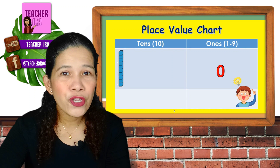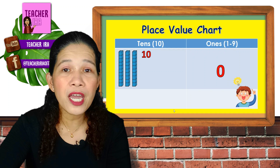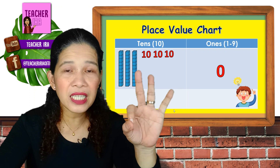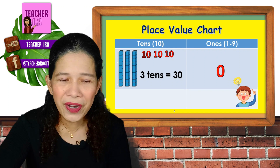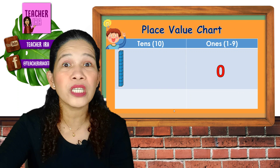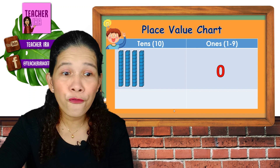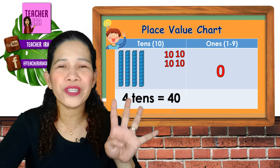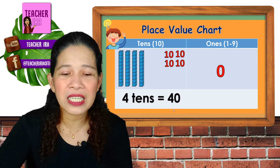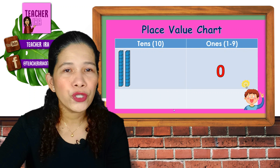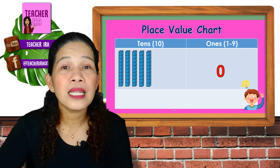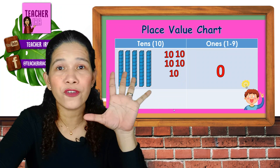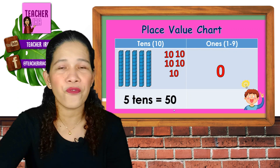Let's add some more — one, two, three stacks now. Ten, twenty, thirty. How many tens are there? Very good, there are three tens, meaning that is 30. Three tens equals 30. Now let's have four stacks — ten, twenty, thirty, forty. Four tens equals 40. Let's have some more blocks — five stacks. Ten, twenty, thirty, forty, fifty. When you see five stacks of blocks, that means that's 50. Five tens equals 50.